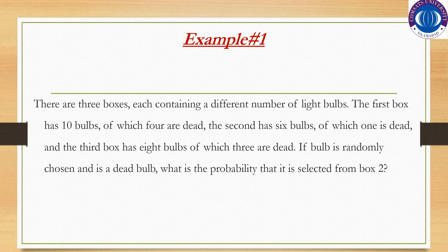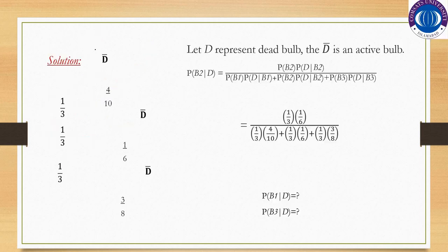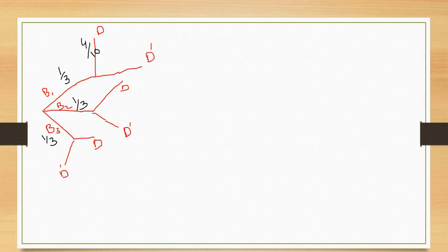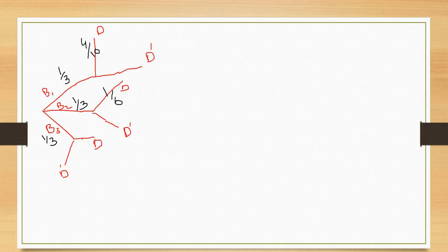First box में dead bulbs 4 हैं — 4/10 इसकी probability आजाएगी। Second में: 6 bulbs and 1 is dead — 1/6. And third में: 8 bulbs and 3 are dead — 3/8.